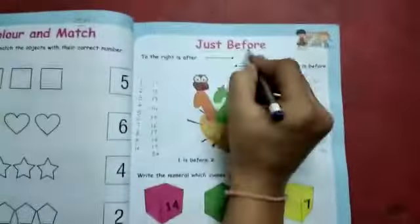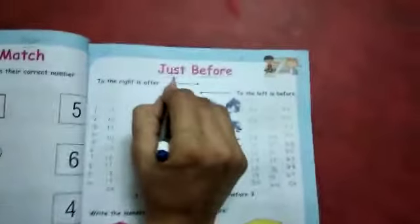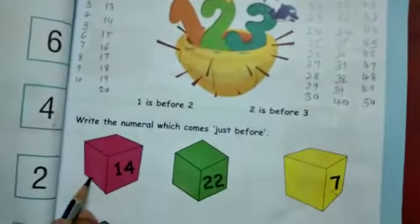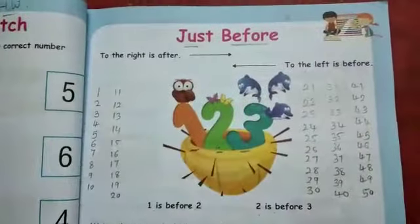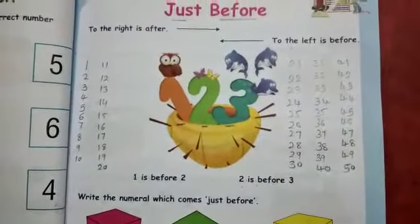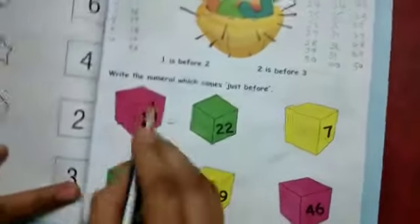Just before. Aaj hum kaunsa topic sikhenge - just before. Before kis ko bolta hai? Jo number ke aage ka number missing ho, usko before number bolta hai. To the right is after - piche ki taraf usko after number bolta hai. Aur aage ki side jo missing ho usko to the left is before. Left side jo blank ho usko before number hota hai.